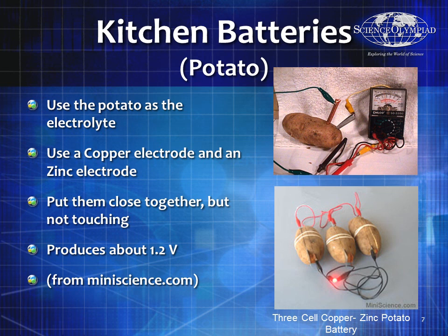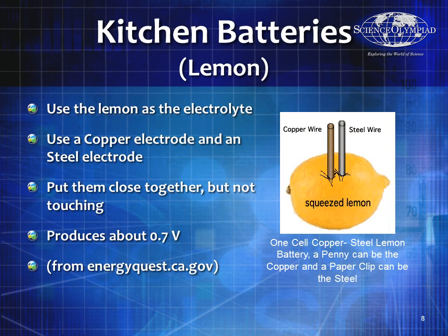We've got two different metals — copper and zinc — and the potatoes are the electrolytes. We can also use lemons. Here's a copper-steel lemon battery: we use a copper electrode and a steel electrode, placed close together but not touching. A lemon only produces about 0.7 volts. The steel could be provided as a paper clip, and sometimes in this event you'll be given six-inch pieces of copper and steel to insert into the lemon and make measurements.